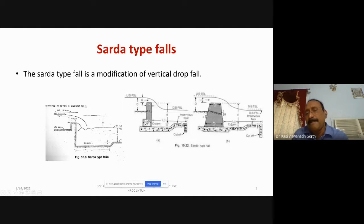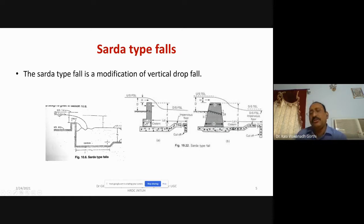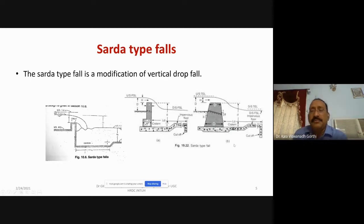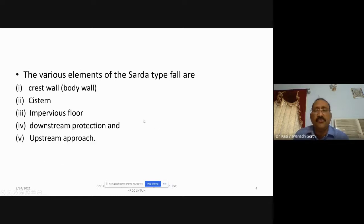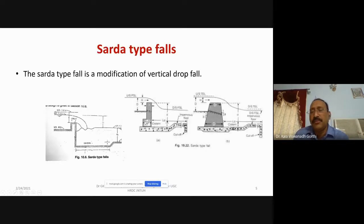In the downstream portion, the cistern is provided. When water falls directly onto the downstream portion, it absorbs and dissipates the energy. However, you also need to provide a good impervious horizontal floor on the downstream portion — cistern followed by impervious floor.